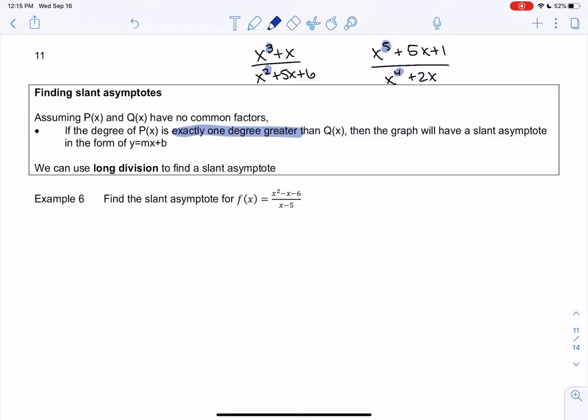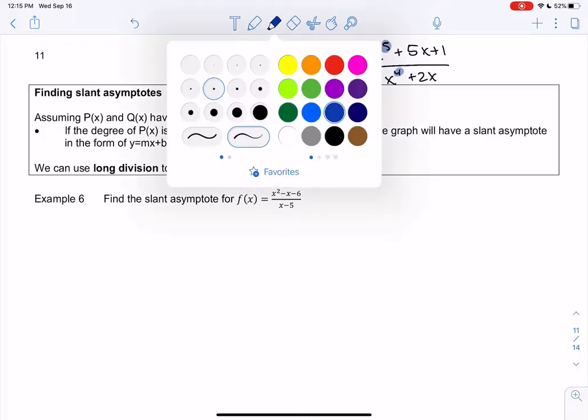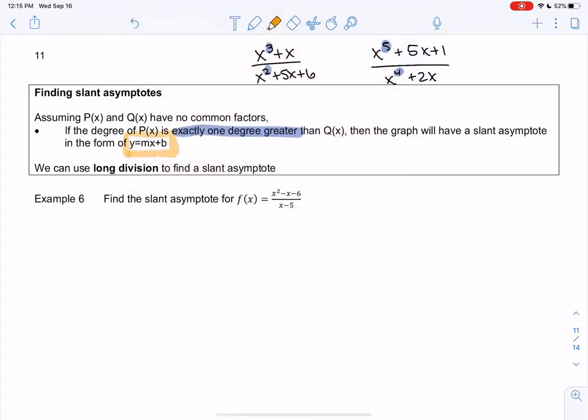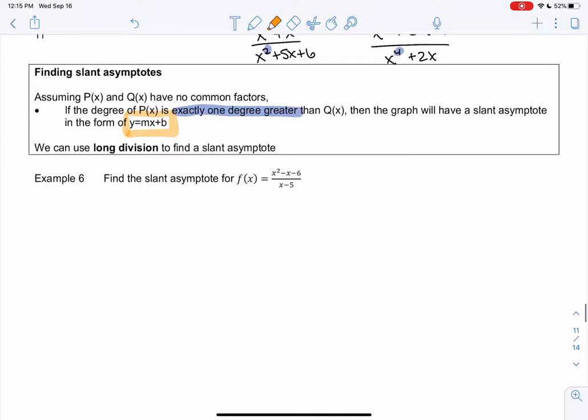It's a special case and a slant asymptote has the form y equals mx plus b. It's approaching a line, so we'll do long division and we should get a line as we do the long division.